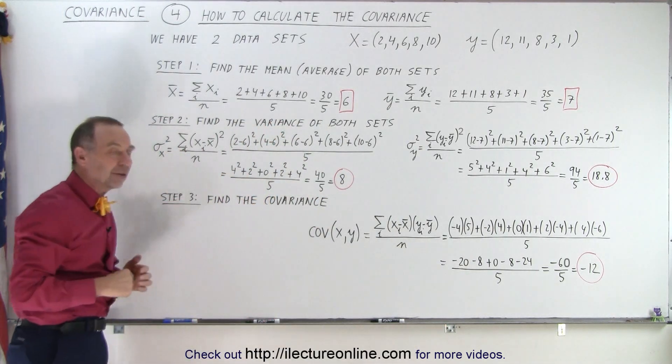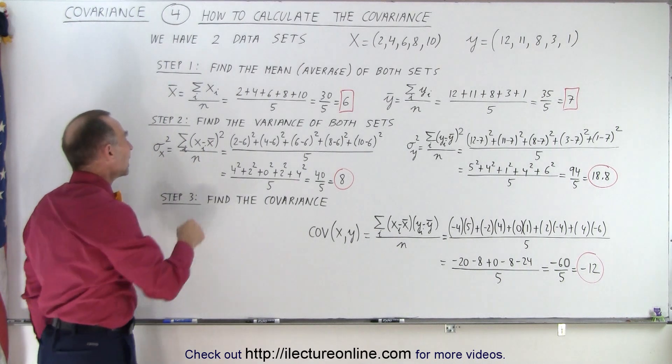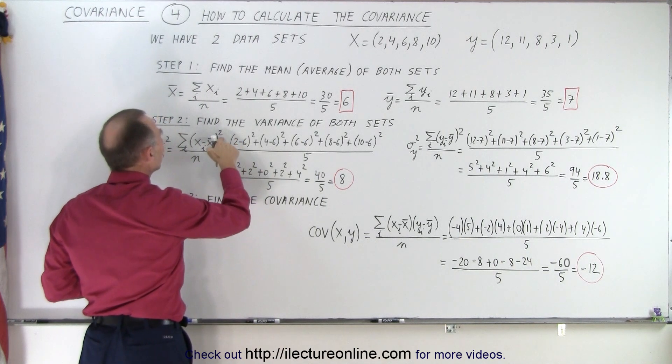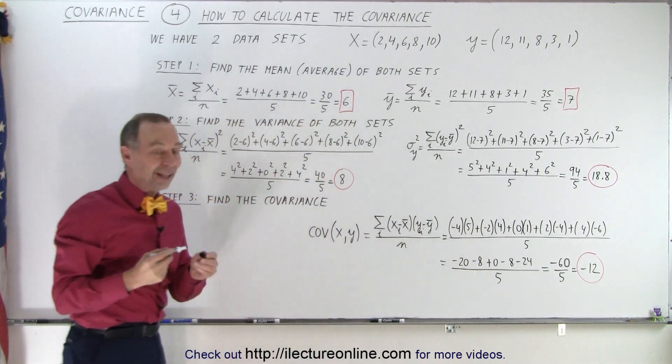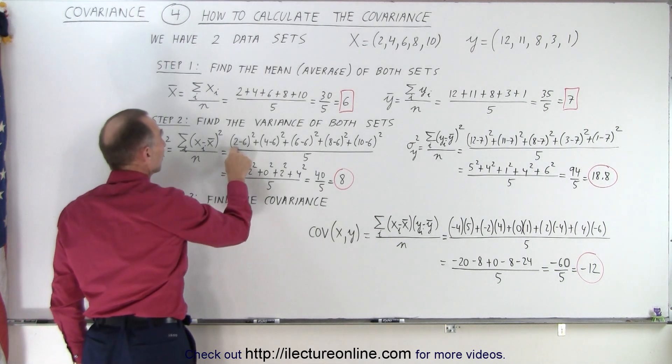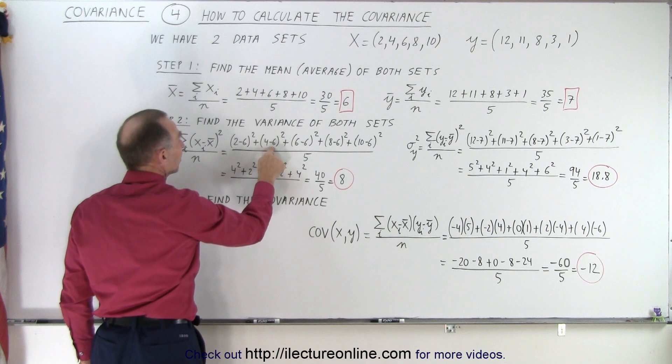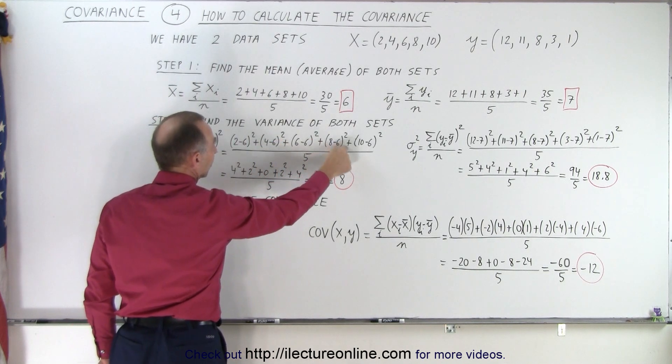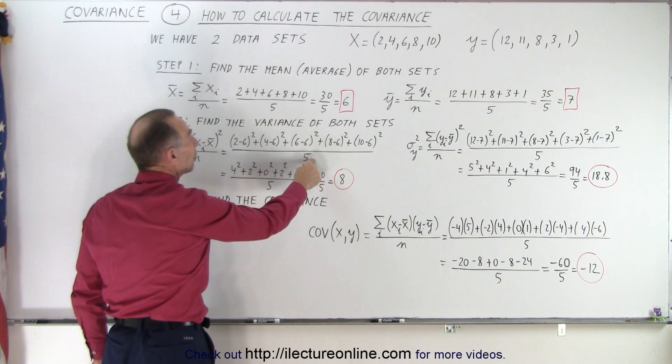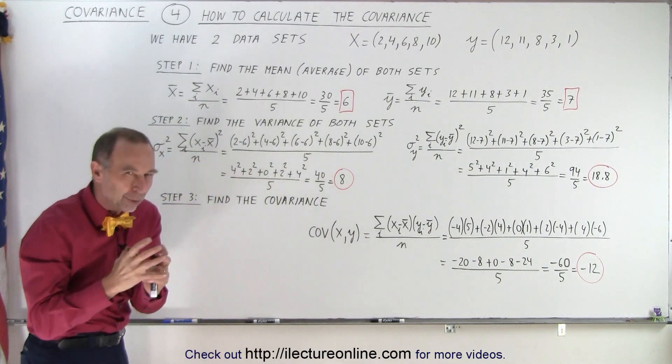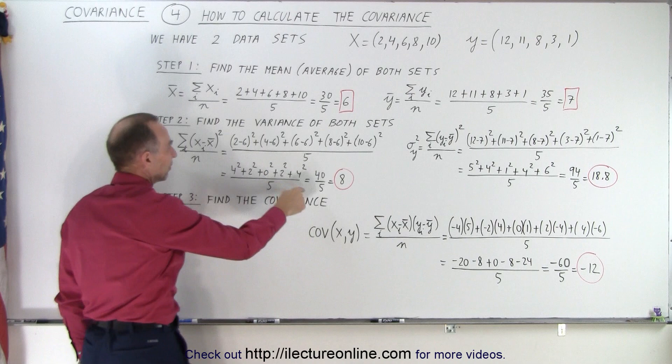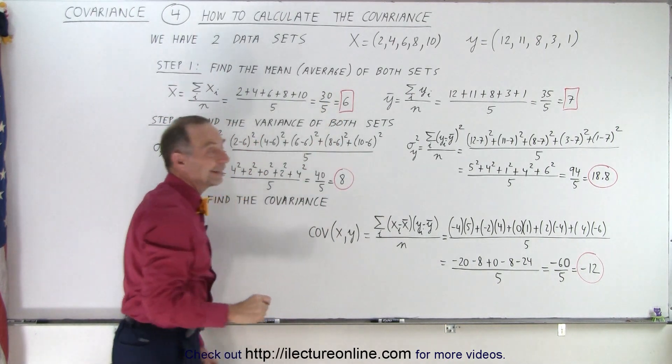Now the next thing we're going to do is find the variance of both sets. To find the variance, you take each of the numbers in the set, subtract the average from that, and then we square that difference. I forgot to put the two up there, so we need to make sure we do that. That means we take the first number minus the average, square that. The second number minus the average squared. The third number minus the average squared. The fourth number minus the average squared. And the fifth number minus the average squared. Add all that together, divide by the total number of numbers. We would end up with n minus one if we just had a sample of the whole population, but we're using the whole population, so we divide by five. 40 divided by five, we get eight. So the variance of our first dataset is eight.